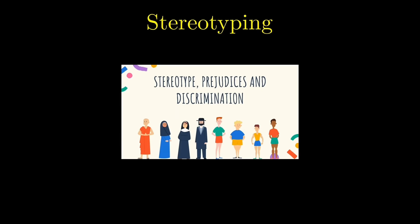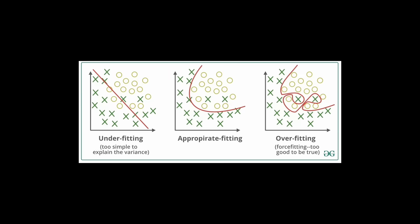This model is then wrongly applied to all individuals within that group. For instance, if someone meets a few individuals from a particular city who are unfriendly, they might conclude that all people from that city are unfriendly.